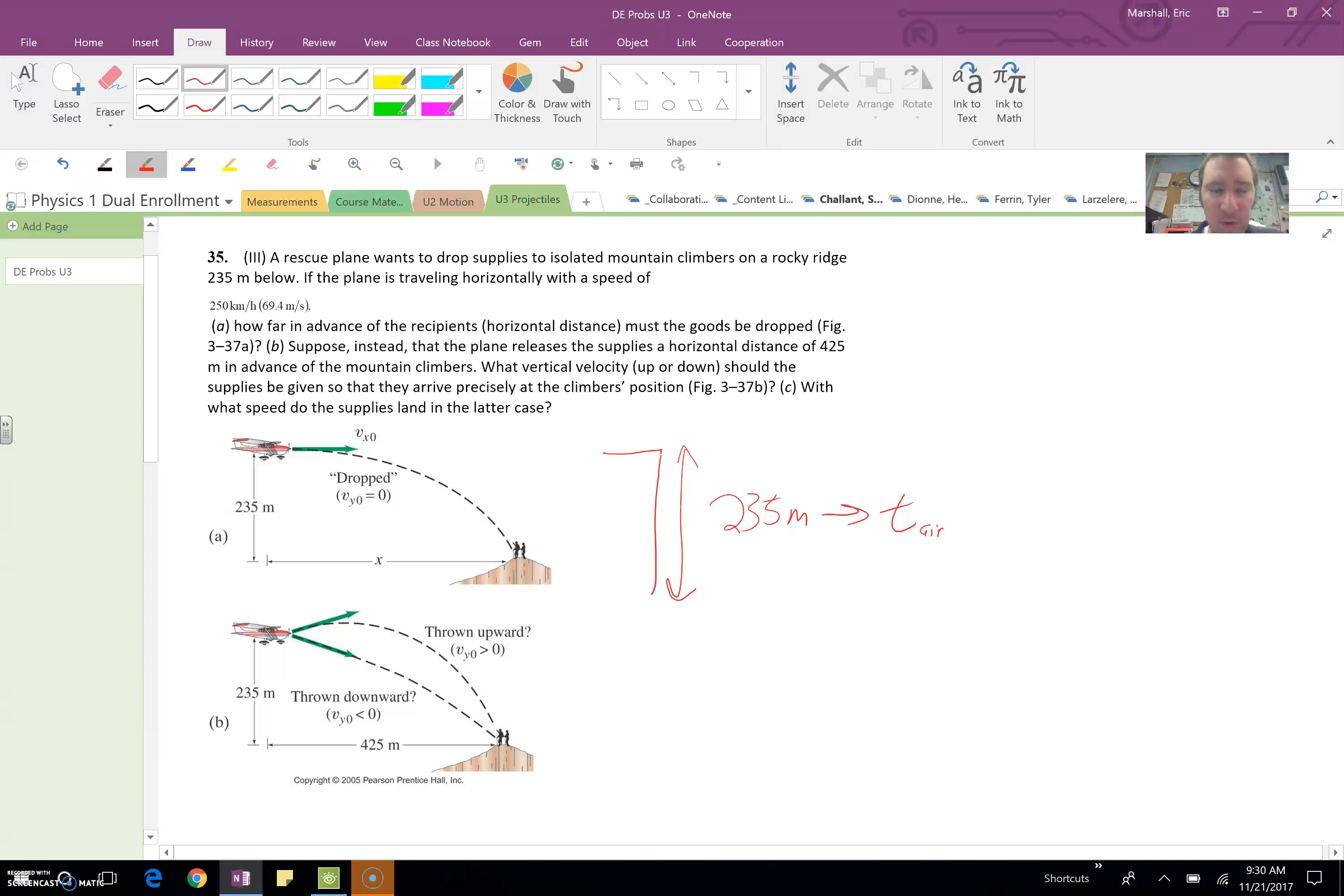That's always a first step. For this one, how far in advance of the recipients must the goods be dropped? Well, if it takes five seconds to fall and you're going 100 meters per second, then you need to drop them five seconds ahead, 100 meters per second times five, 500 meters ahead of time. So we'll start out by figuring out the time it's in the air.